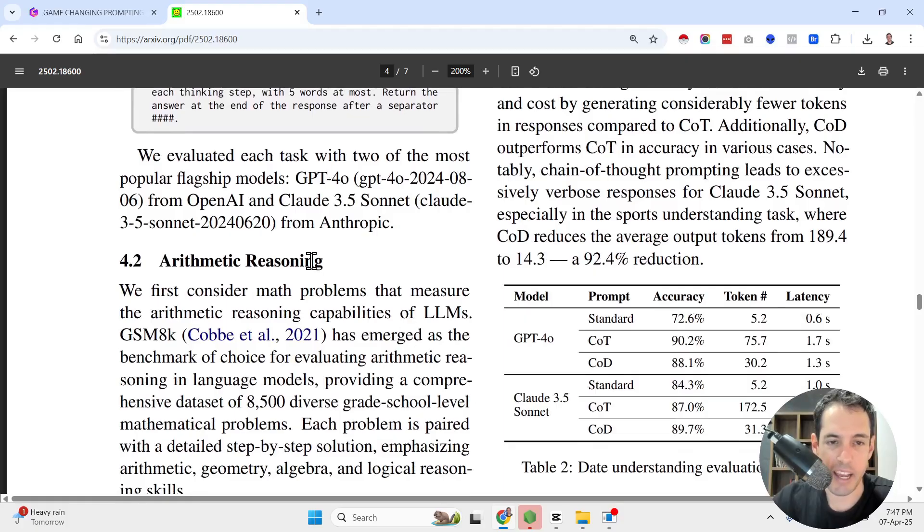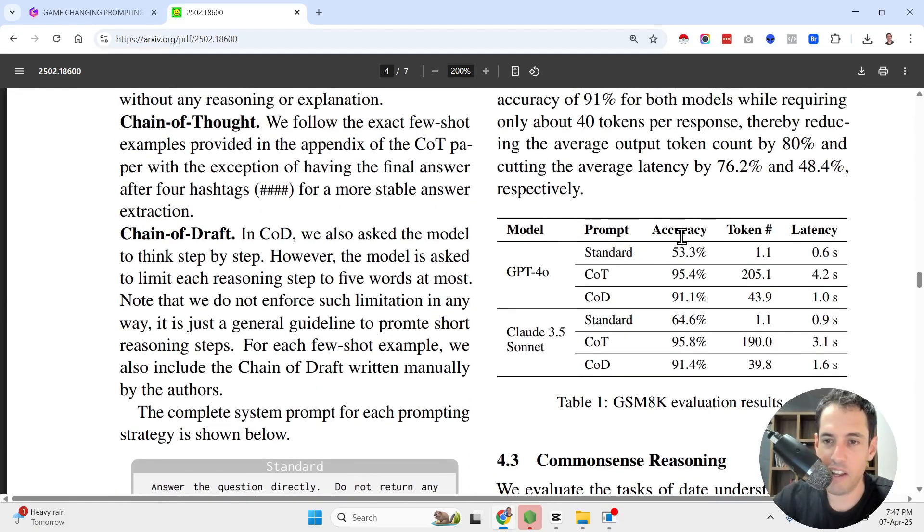Now, they did some tests with arithmetic reasoning. These were the results. So as you can see here with GPT-4O model and with Claude 3.5 Sonnet, this is the accuracy, this is the amount of tokens, and this is the latency. So you can see with GPT-4O, the accuracy with the standard prompt was 53%. With chain of thought, it's 95%. And with chain of draft, it's 91%. So slightly less. But on the other hand, you can see that the amount of tokens is between 20 to 25% of the tokens generated for GPT-4O. And the latency in the chain of draft is 25%. Or you can say that the chain of thought took four times slower than the chain of draft.